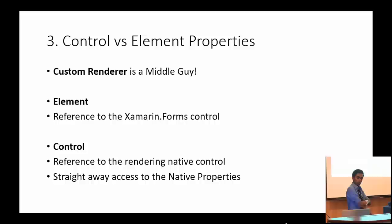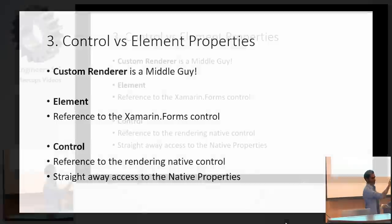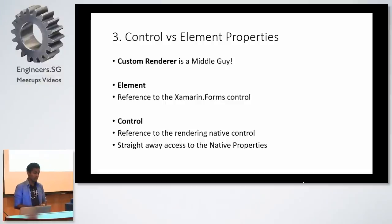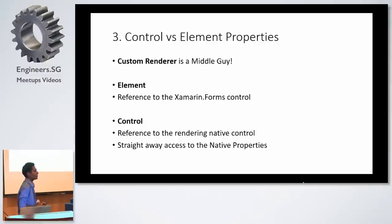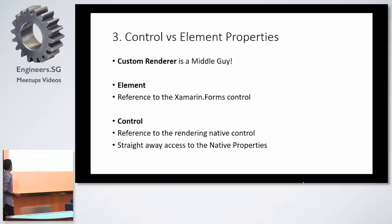A custom renderer is more like a middle guy between the Xamarin Forms level and the native level, with hooks for both sides. The base class renderer always has two important properties: `Element` and `Control`. The `Element` property provides a reference to the Xamarin Forms level control, and the `Control` property provides a hook to the native level control that this renderer is going to convert the Xamarin Forms control into.